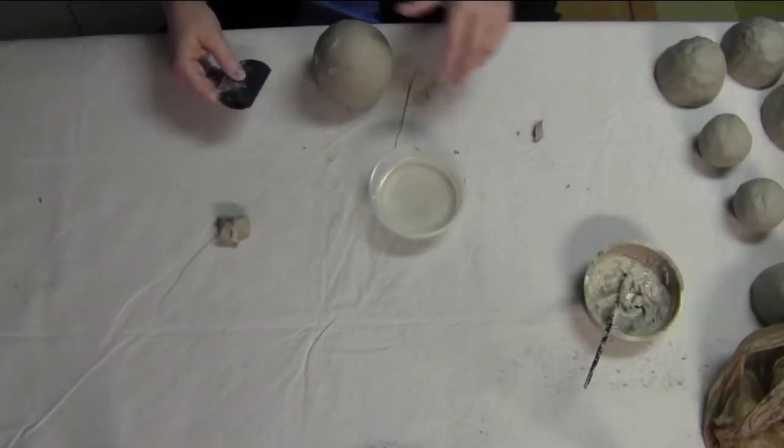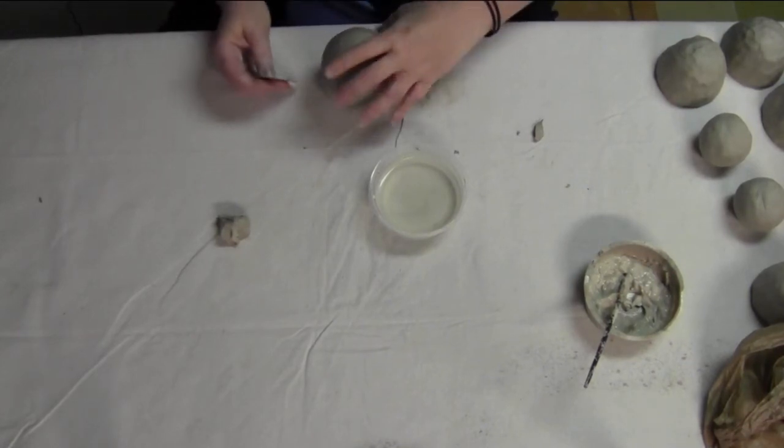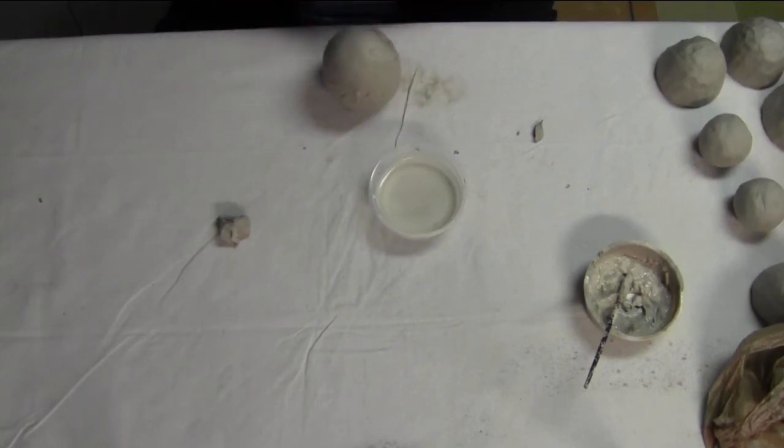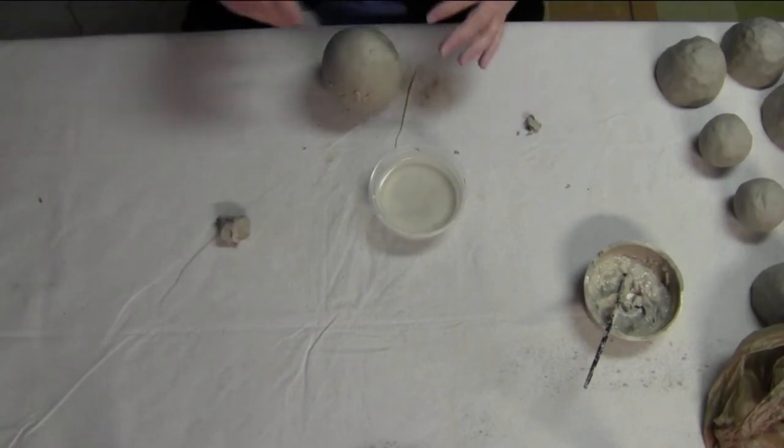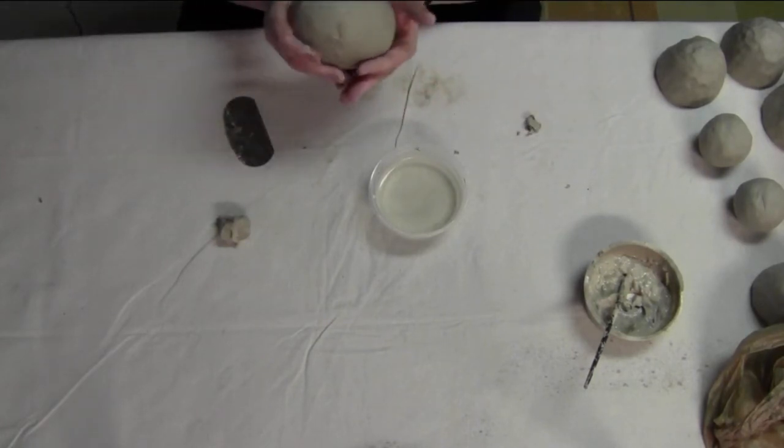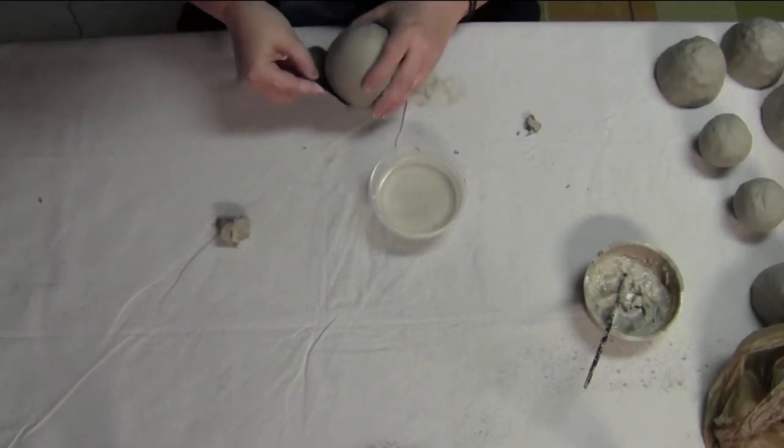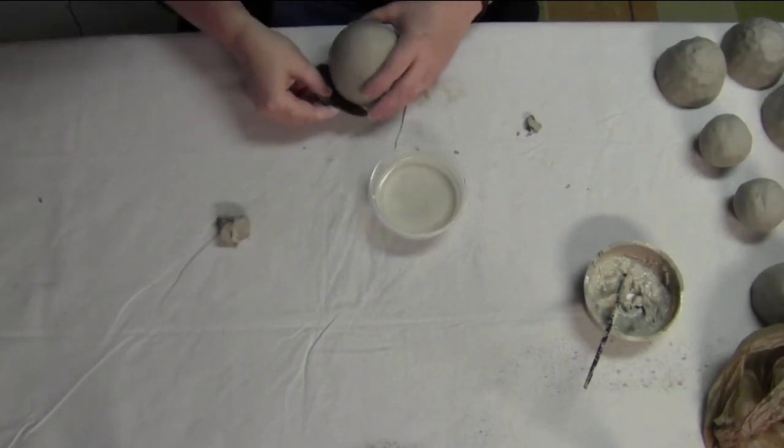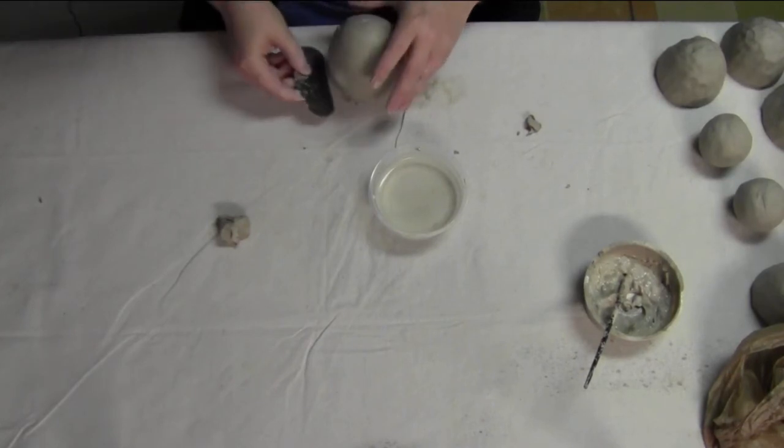You'll also notice that I'm using the rib tool to scrape the clay as well. Especially if you don't have a lot of down time between smoothing and when you've attached your two pinch pots together, sometimes the seam persistently kind of pops out and so it's necessary to scrape that down a little bit.